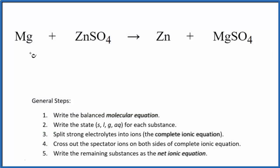To write the balanced net ionic equation for Mg plus ZnSO4, that's magnesium plus zinc sulfate, first we need to balance the molecular equation. This is our molecular equation here. So the molecular equation, it's already balanced, so that makes that easy.